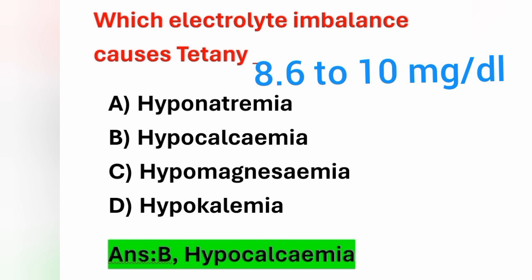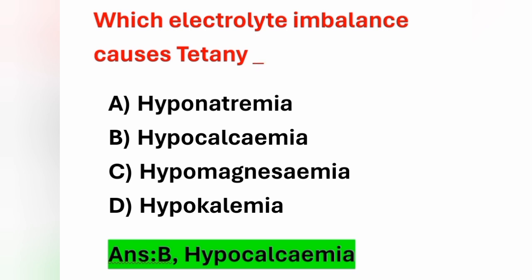One of the neuromuscular changes in hypocalcemia is tetany. Other neuromuscular changes include twitching of the hands and fingers, cramps, painful muscles, spasm of the feet and foot muscles, paresthesia followed by numbness, and positive Trousseau's and Chvostek's signs. Normal serum calcium level is 8.6 to 10 mg per deciliter. Below 8.6 indicates hypocalcemia; above 10 indicates hypercalcemia.